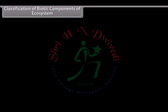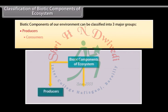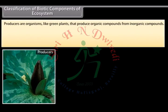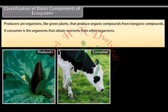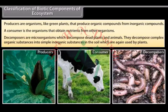Biotic components of our environment can be classified into three major groups: producers, consumers, and decomposers. Producers are organisms like green plants that produce organic compounds from inorganic compounds. A consumer is an organism that obtains nutrients from other organisms. Decomposers are microorganisms which decompose dead plants and animals into simple inorganic substances in the soil, which are again used by plants.